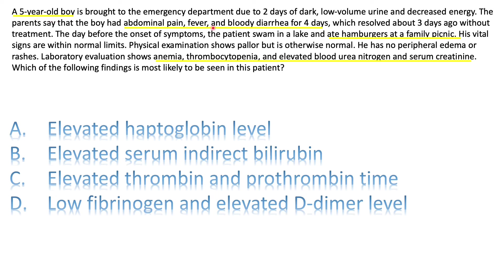Next question: a five-year-old boy is brought to the ER due to two days of dark, low-volume urine and decreased energy. Dark, low-volume urine means oliguria. The parents say the boy had abdominal pain, fever, and bloody diarrhea for four days which resolved about three days ago. The day before symptom onset, the patient swam in a lake and ate hamburgers at a family picnic.